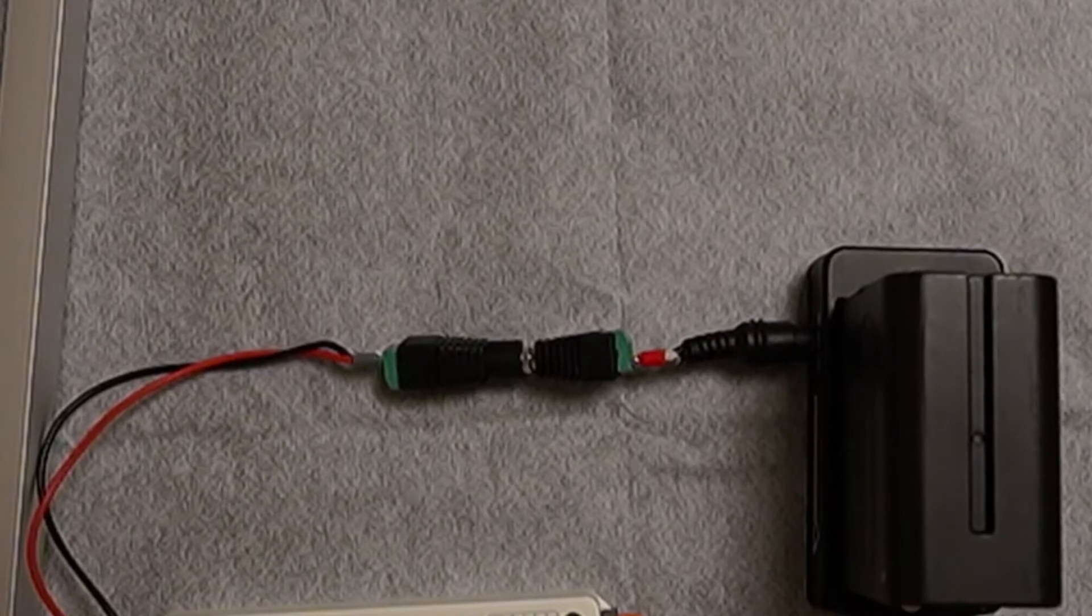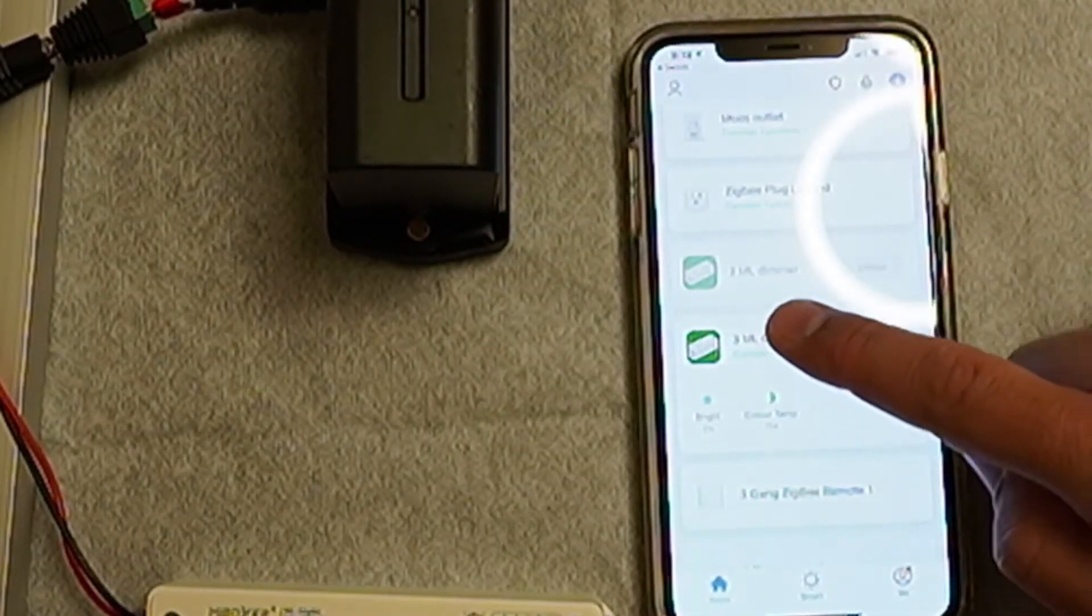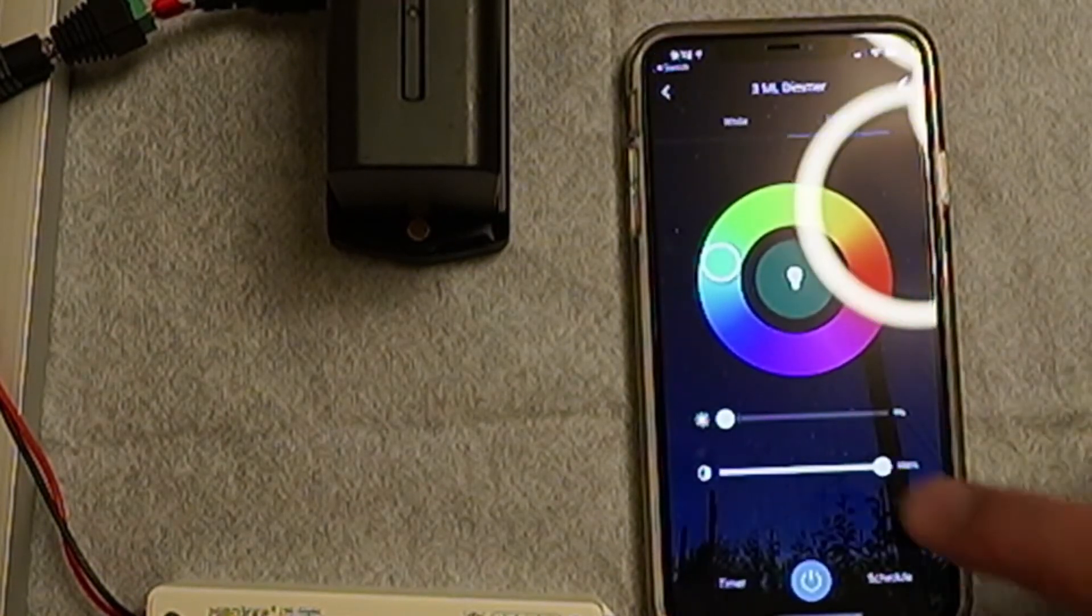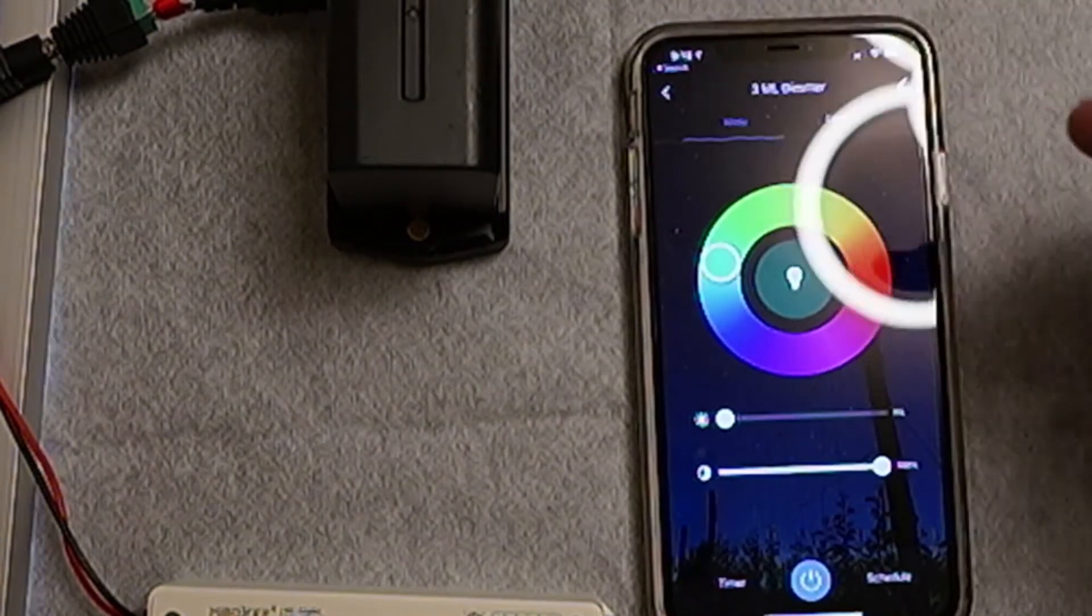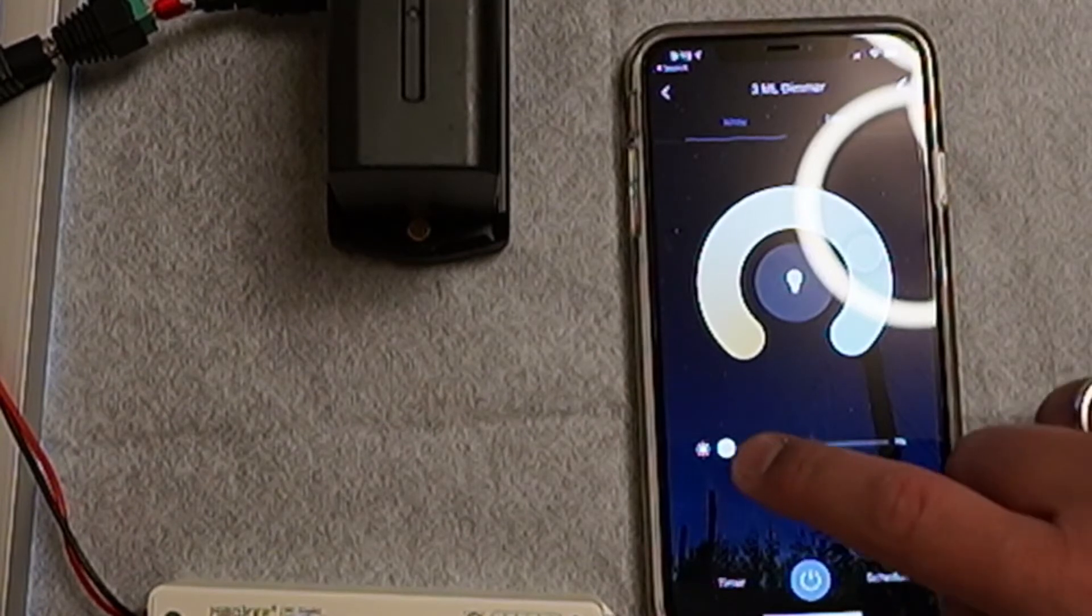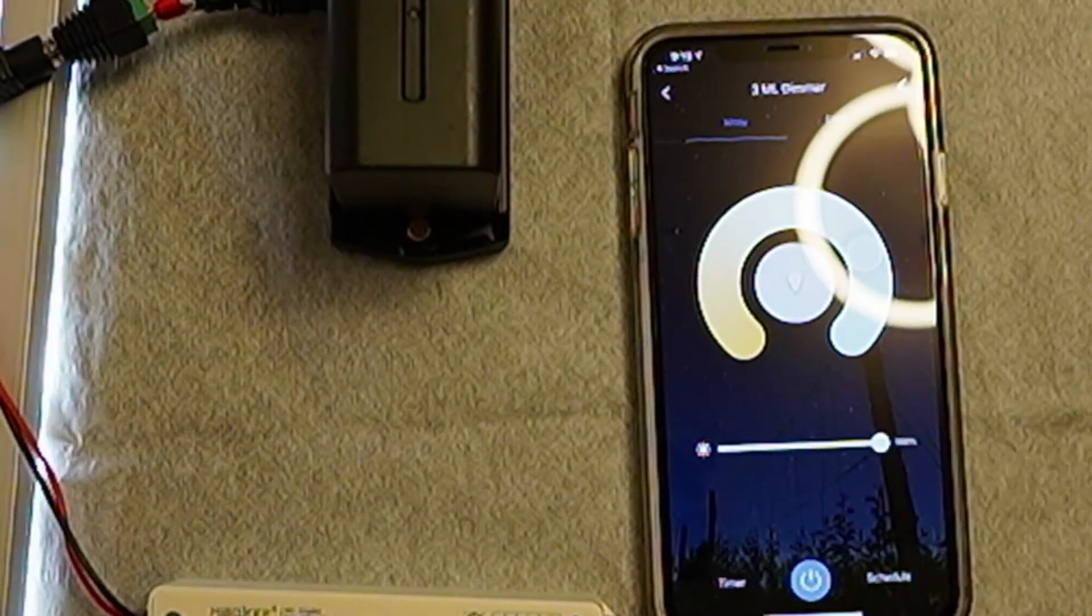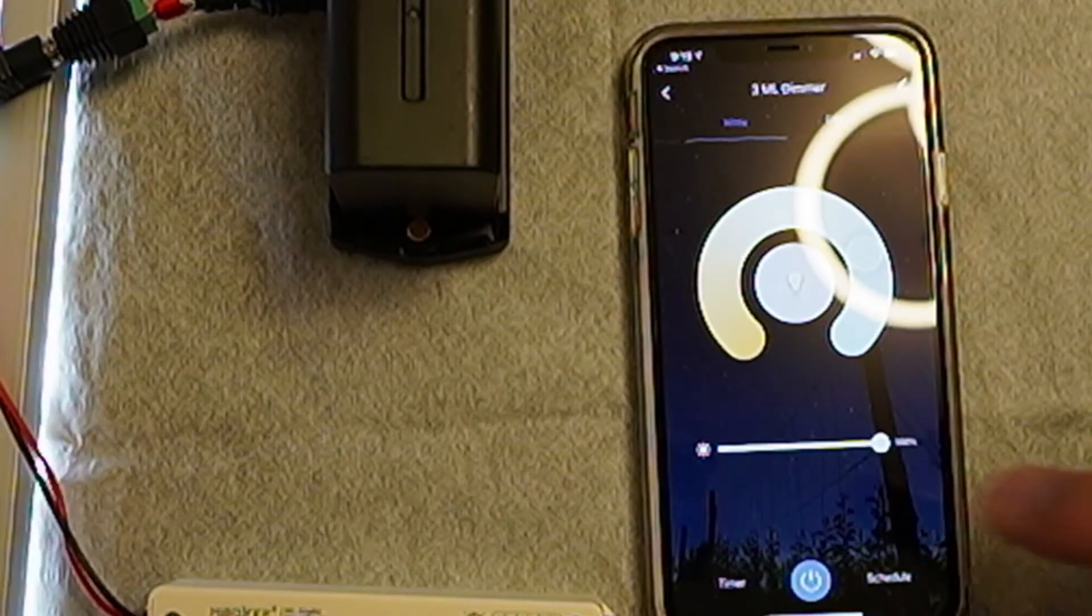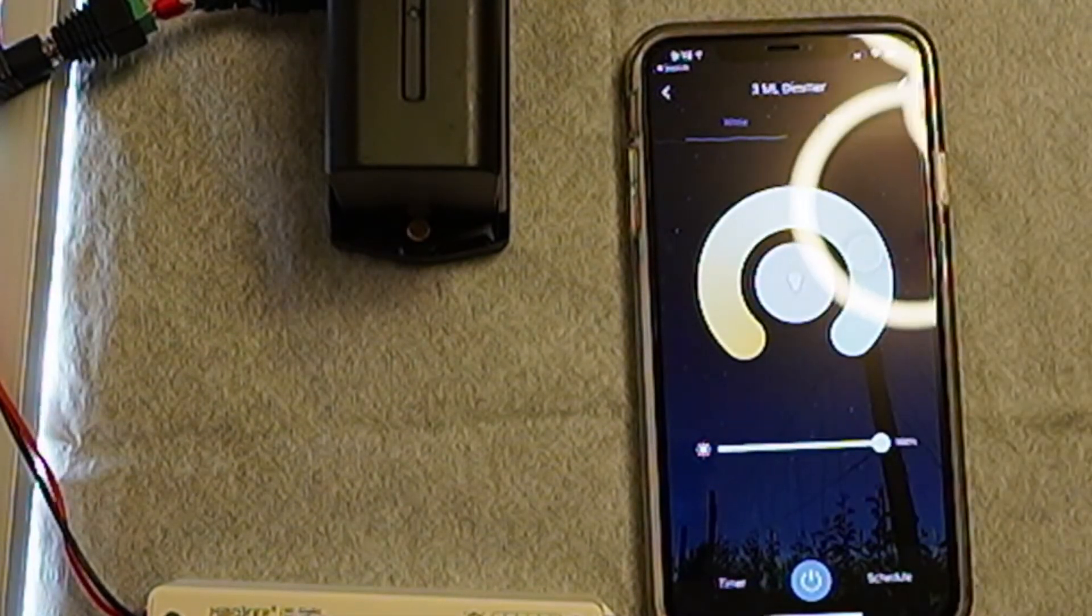So if I open the Smart Life app you can see 3ML dimmer is there. You can see that it shows up here, you go to white light because my light is really white, and you can see that it's good start up. I can just control the light here on the side, you can see the light is coming up, so you can completely control it.